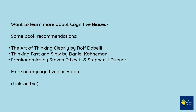Want to learn more about cognitive biases? Some book recommendations: The Art of Thinking Clearly by Rolf Dobelli, Thinking Fast and Slow by Daniel Kahneman, Freakonomics by Stephen D. Levitt and Stephen J. Dubner. More on MyCognitiveBiases.com.